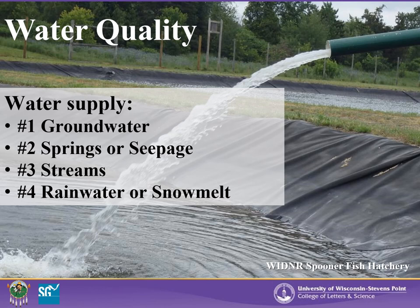Water quality in the pond starts with the water supply. Having a safe, dependable source of water within a required quantity or flow is imperative for success with your ponds. There are four main ways of filling your ponds with water: groundwater, springs or seepage, streams, and rainwater or snowmelt.